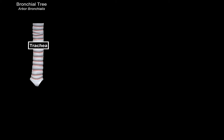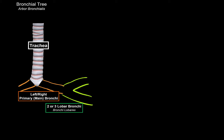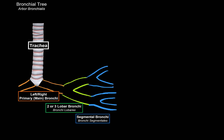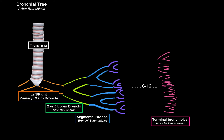Here is a quick scheme that summarizes this. The bronchial tree consists of the right and left main bronchi, which divide into 2 or 3 lobar bronchi — 3 on the right lung and 2 on the left lung. They will divide into segmental bronchi — 10 for the right lung and 8 for the left lung. And they will keep splitting 6 to 12 times until they become really small, approximately a half to 1 mm in diameter, now called bronchioles or terminal bronchioles, which will be the end of the bronchial tree.